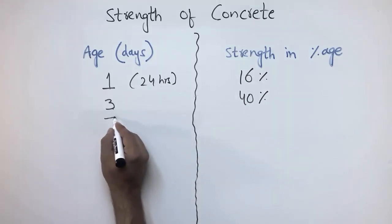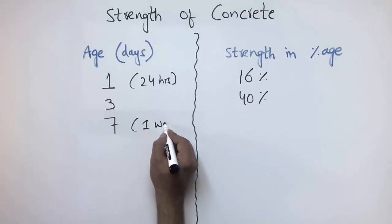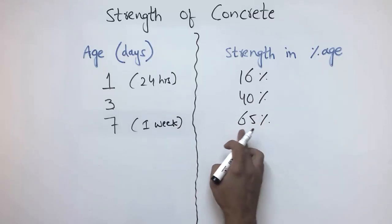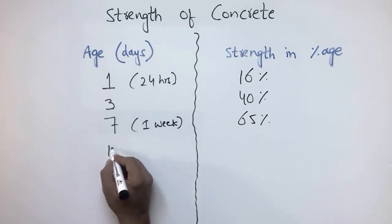After seven days - which means one week - the concrete gains 65 percent of its strength, which is more than 50 percent.